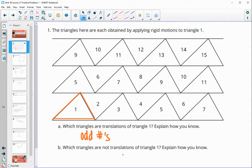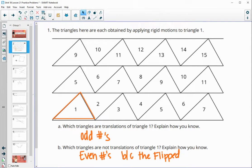Which triangles are not translations of triangle one? So that's going to be the even numbers. And because they flipped. So that peak is on the bottom instead of the top. So then it can't be a translation. There was some type of rotation or reflection happening.